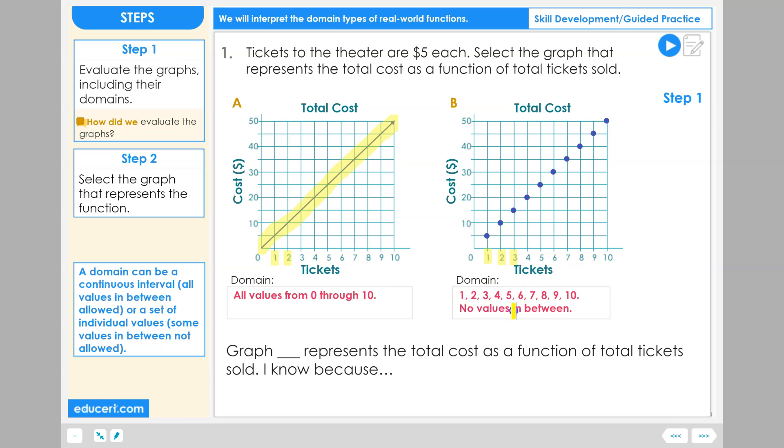And no values in between are allowed in this domain. How did we evaluate the domains of the graph? We evaluated the domains by using the graph line or graph dots to tell us whether the domain was a continuous interval or a set of individual values.